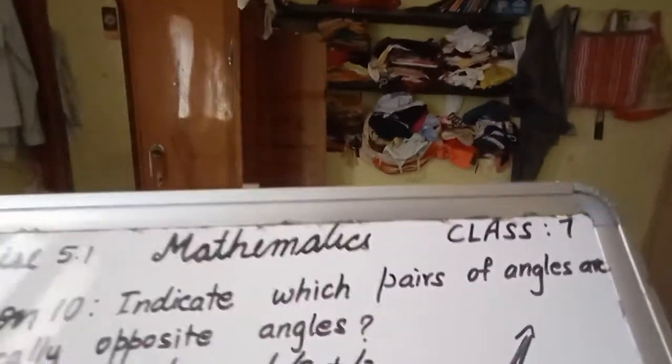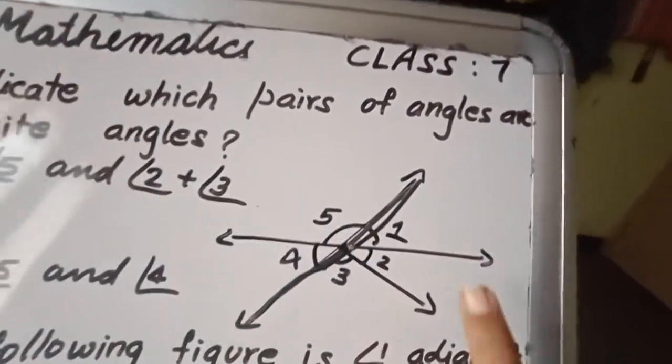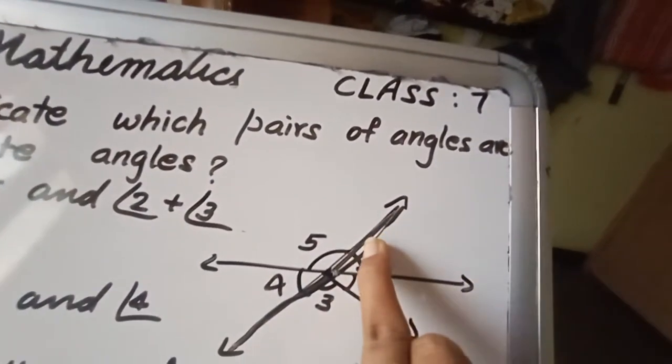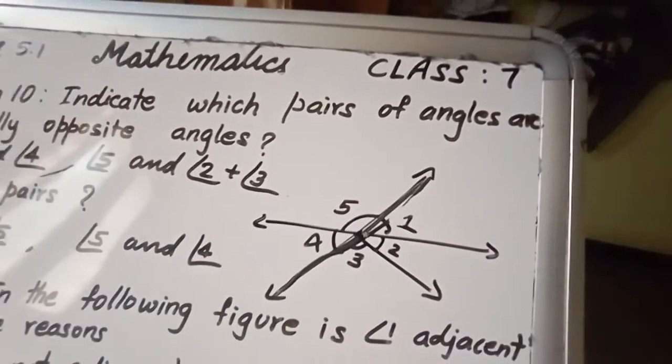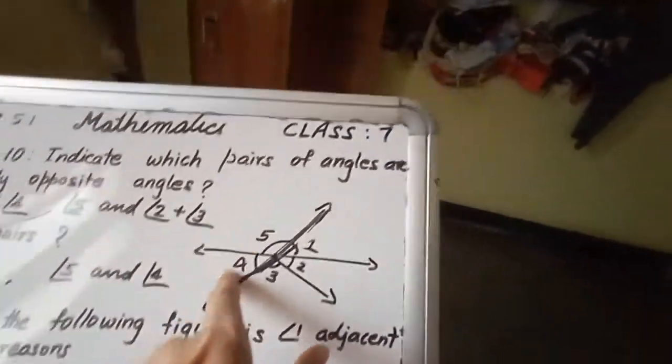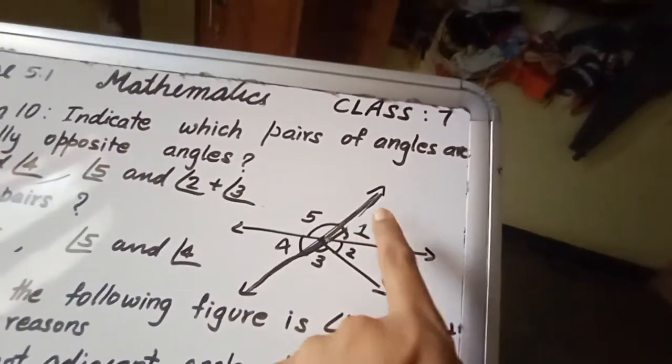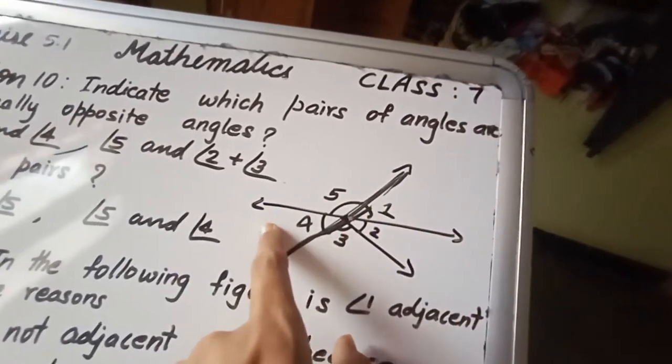Now let us see the figure. Here there is a figure. In this figure, let us find out the vertically opposite. This is 4, vertically opposite is 1. So 1 and 4 is vertically opposite.